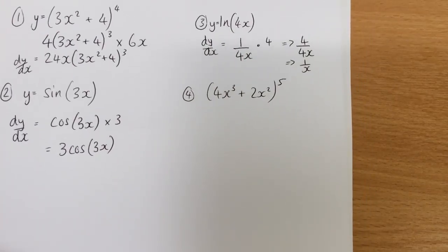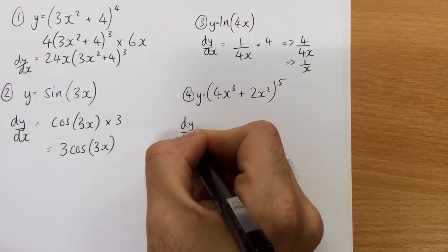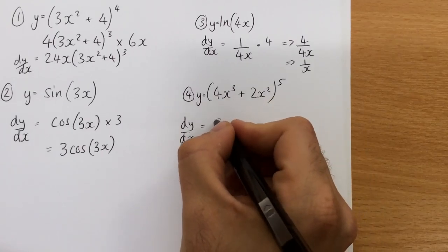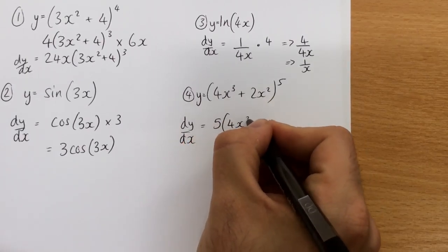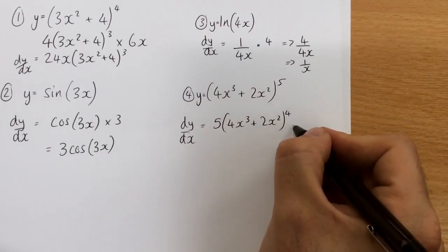Last one, follow the same pattern as we did for the previous one, so if that was y, dy by dx, bring down the power, 5 bracket 4x cubed plus 2x squared, take one away from the power, what am I times in by this time?